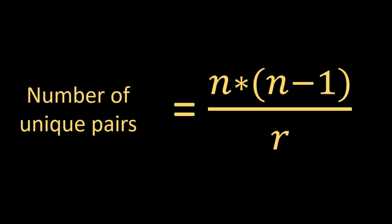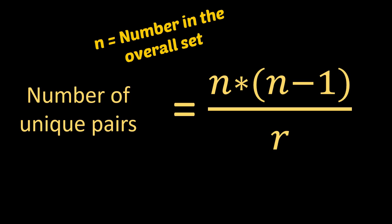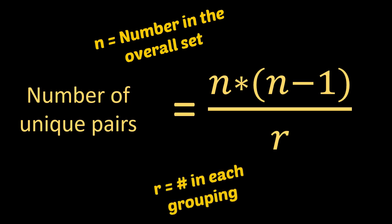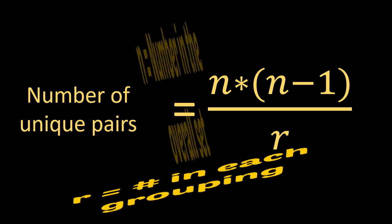It's easy to get to 400, but it's harder to get down to the 190 unique and legitimate pairs. Here is the formula that will help us know how many legitimate pairs we should have, where N equals the number in our total set. So if there are 20 students, N is 20. R represents the groupings we want to make, so R is 2 because we want pairs. If we wanted trios, R would be 3.